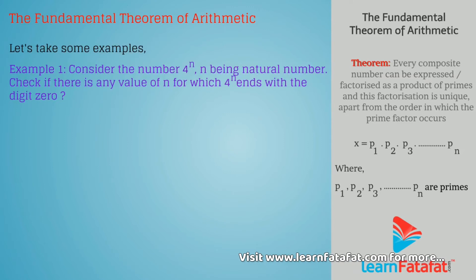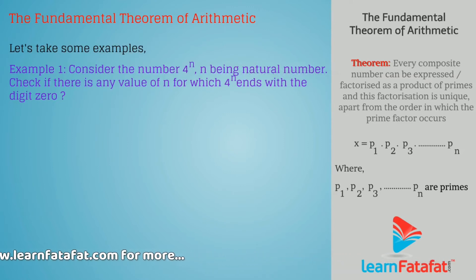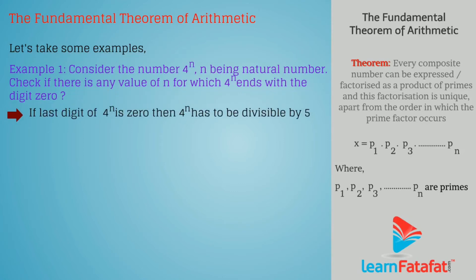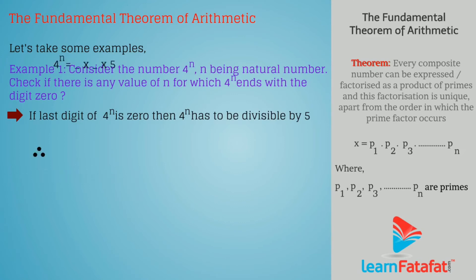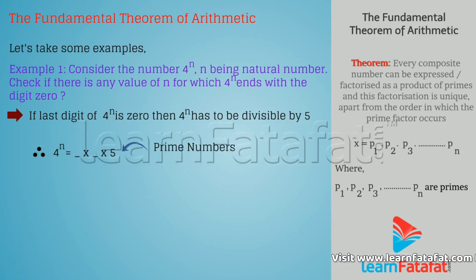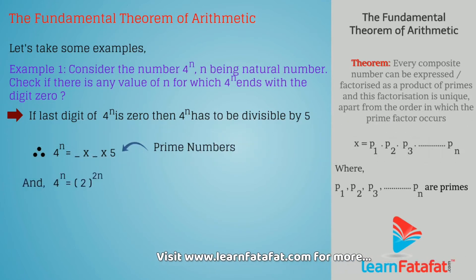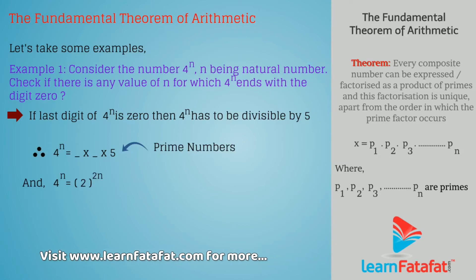Let's take some examples. First, we have to calculate the value of n where 4 raised to the power n ends with digit 0. If the last digit of 4 raised to n is 0, then 4 raised to n has to be divisible by 5, and the factors of 4 raised to power n would contain the prime 5. Now, 4 raised to power n can be written as 2 raised to the power 2n.